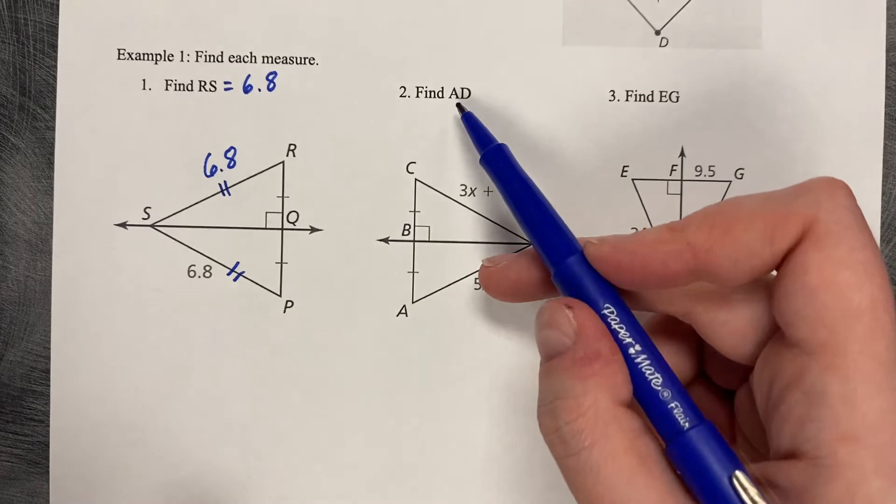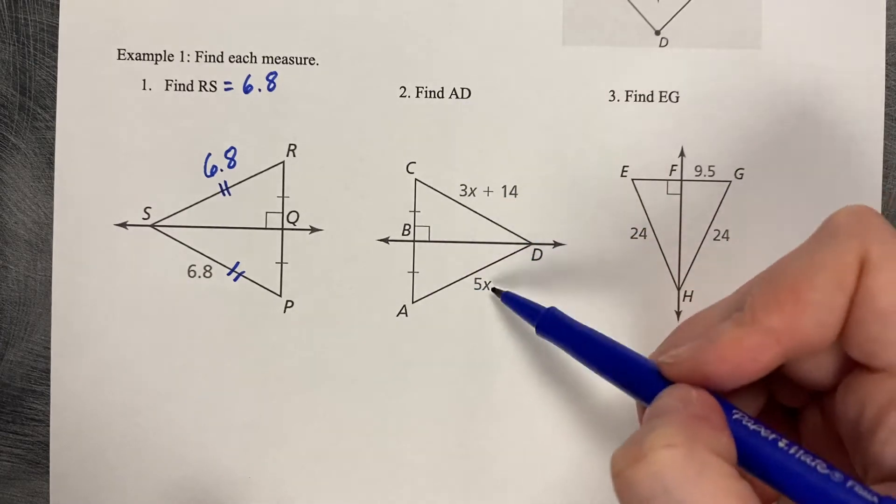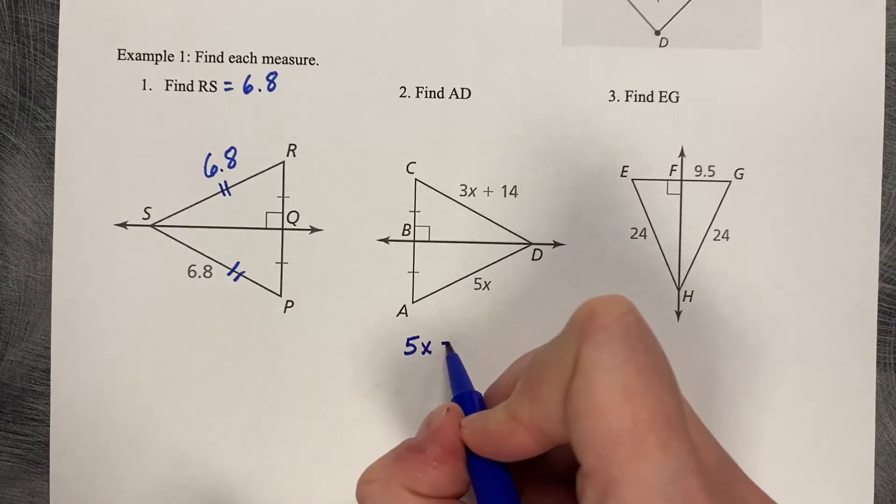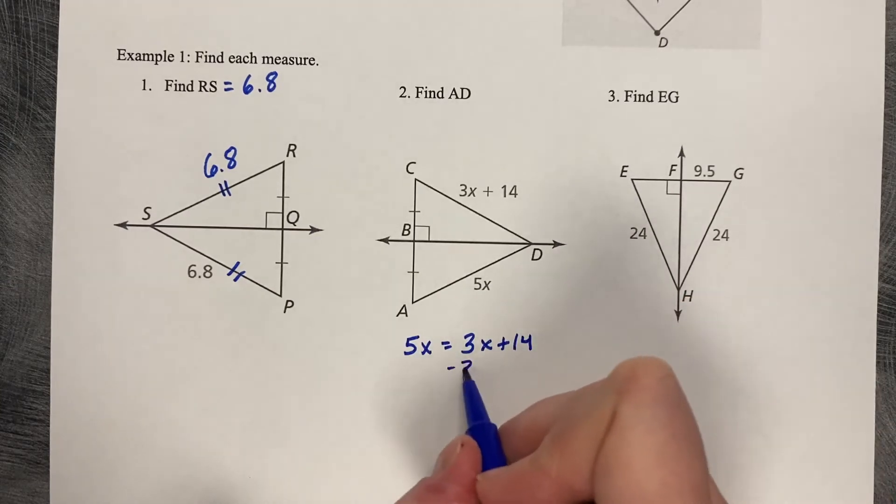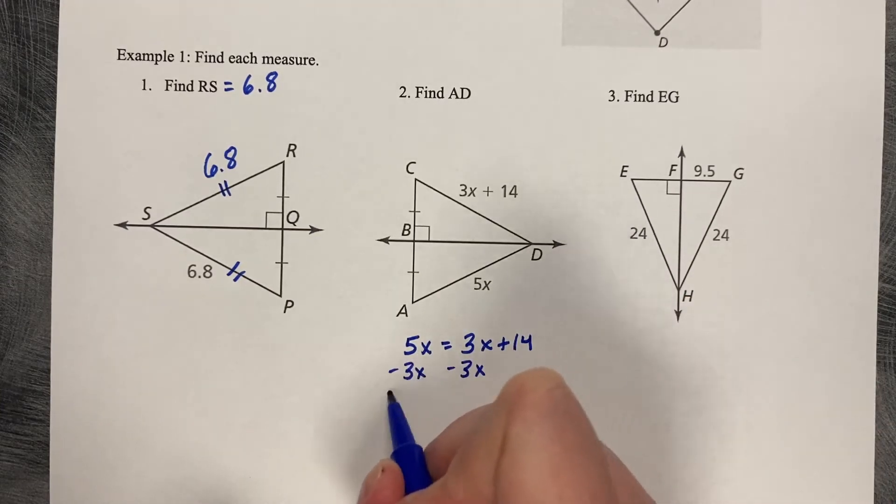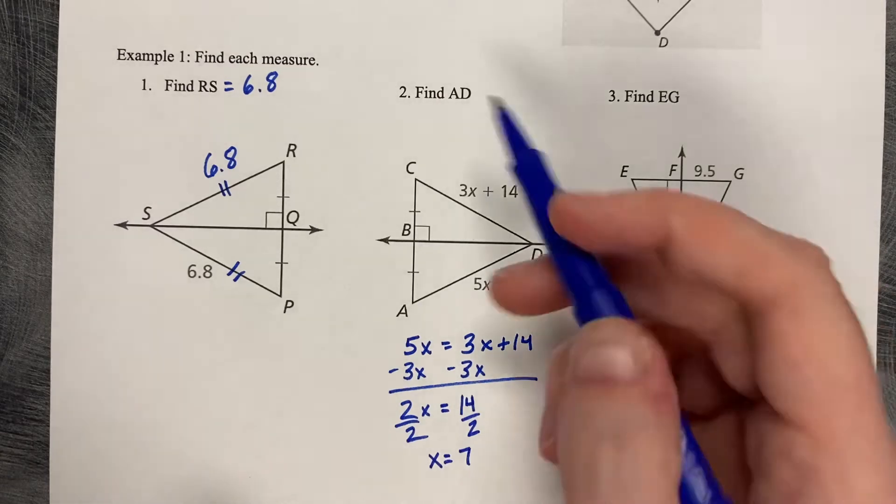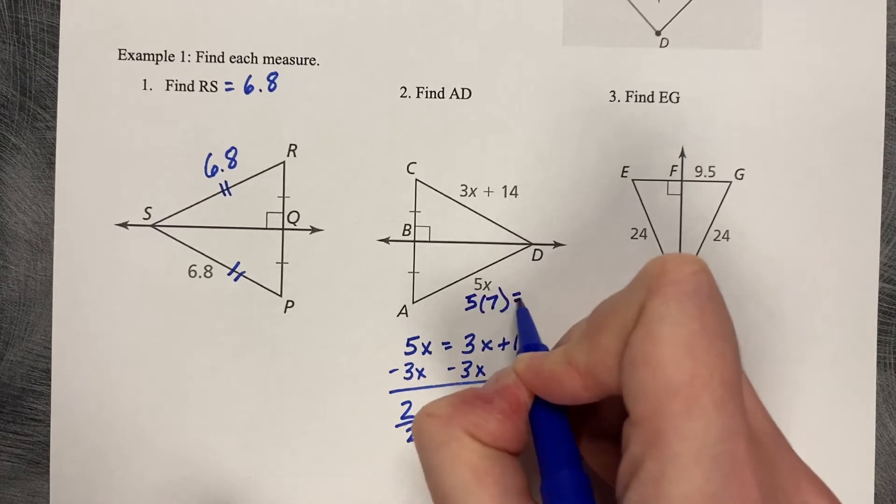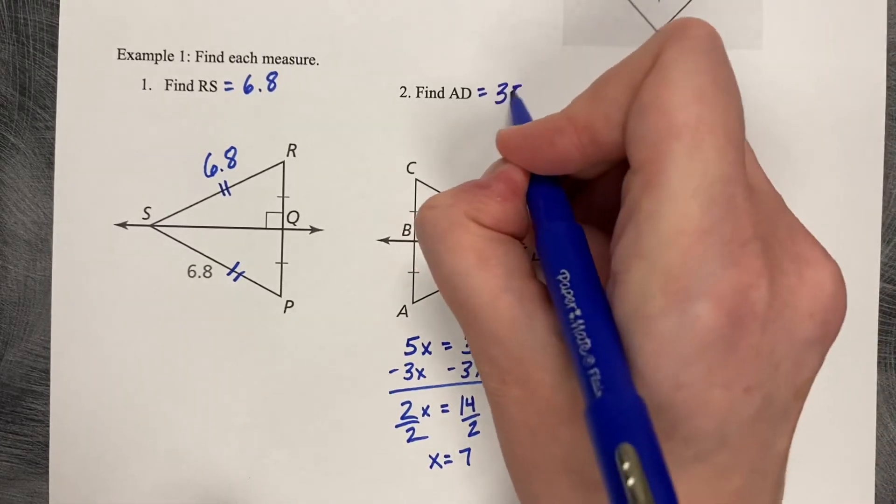Find AD. Here's my perpendicular bisector. So that means that these two lengths must be the same. So we can set those equal and solve for X. 5X equals 3X plus 14 minus 3X. 2X equals 14 divided by 2. X equals 7. But we're not quite finished. It wants us to know how long is AD. So 5 times 7, which is 35. So AD is 35.